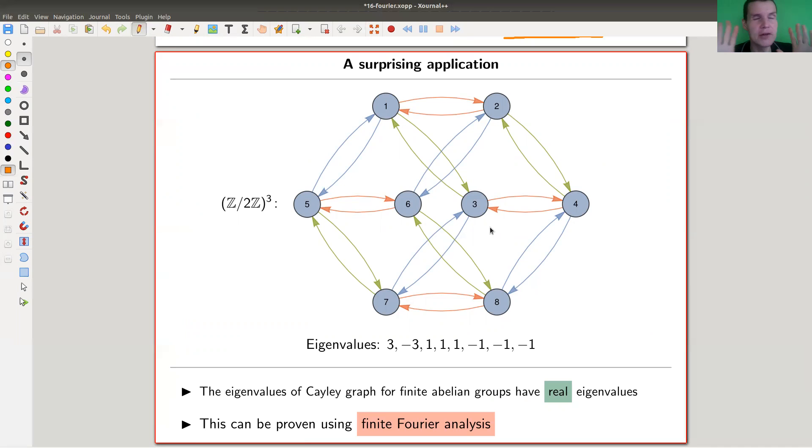Finite abelian groups - you can generalize that to non-abelian groups, you need to be very careful. Non-abelian groups have non-trivial characters, you need to be careful how to do it but you can.